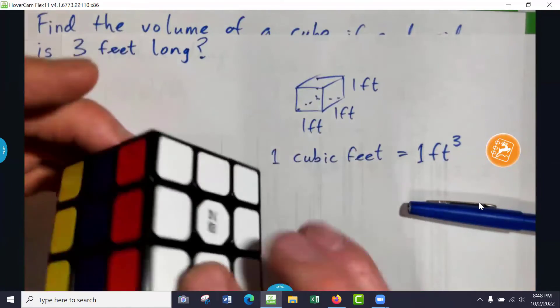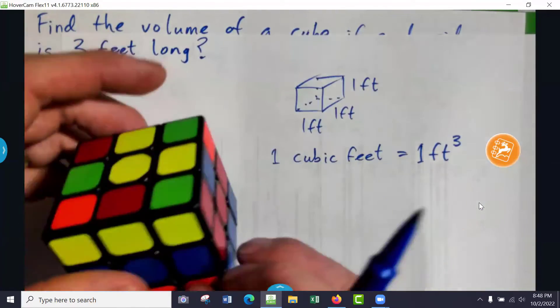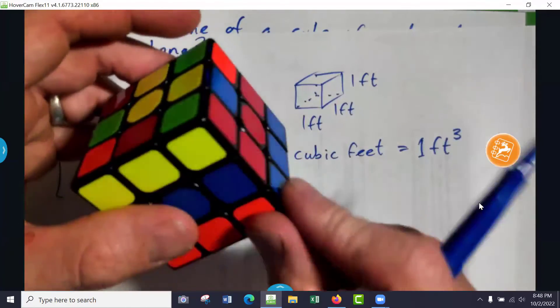So, you've got 27 little cubes making up the big cube. And imagine these are all cubic feet, the little ones.